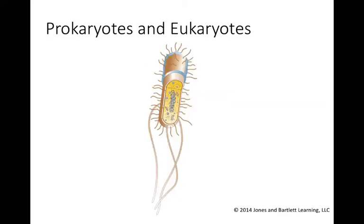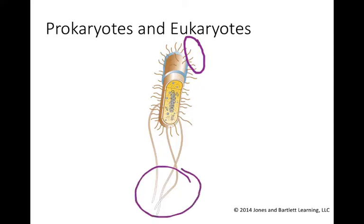I've zoomed in on the image of the prokaryote because this is the basis for the remainder of today's lecture. We're going to focus on some structures found within the microorganism. On the outside, you'll find fimbriae, and we'll also talk about pili later on. Here you find the flagellum, required for movement. We also have this slimy-looking layer known as a glycocalyx, and I'll talk about the importance of that later on.